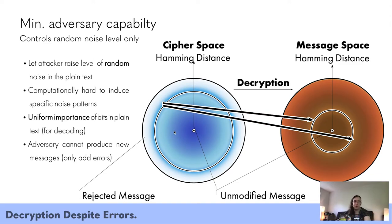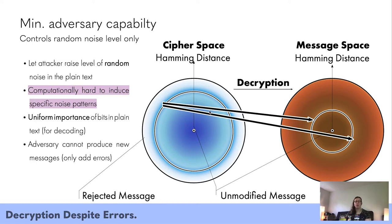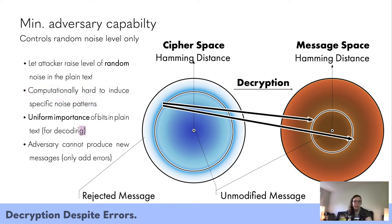From a functionality point of view, the goal is to let the attacker raise the level of random noise in the plaintext but not let them induce any specific noise patterns. We have this ring — really more like a halo with a smooth drop-off outside — and all points on the ring roughly decrypt to points on a corresponding ring in message space. All points on these rings are of the same Hamming distance from the original ciphertext, and even two adjacent messages in cipher space can land at two completely different points on that ring in message space — random noise, but not a specific noise pattern.